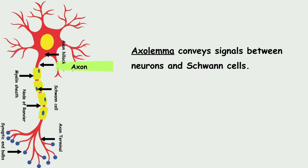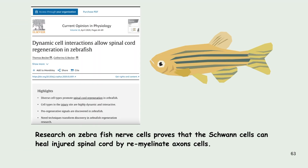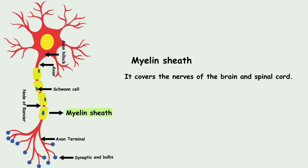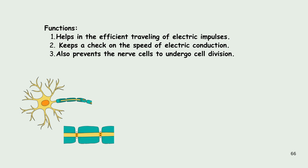Next are the Schwann cells. Schwann cells are the myelin-forming cells. Research on zebrafish nerve cells proves that Schwann cells can heal injured spinal cord by remyelinating the axon cells. Next is the myelin sheath. It covers the nerves of the brain and spinal cord. Myelin sheath is an insulating, lipid-rich layer wrapping the nerve cells. Its functions include helping in the efficient traveling of electrical impulses, keeping a check on the speed of electric conduction, and also preventing the nerve cells from undergoing cell division.